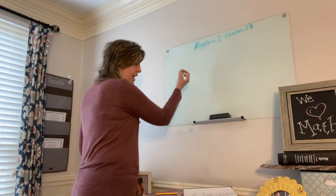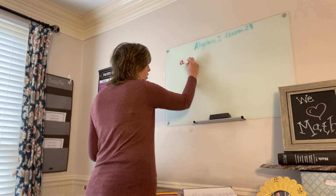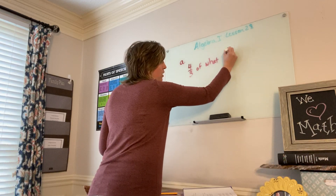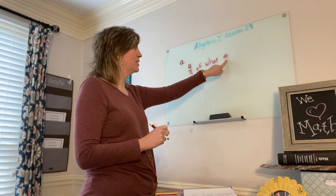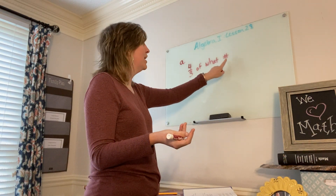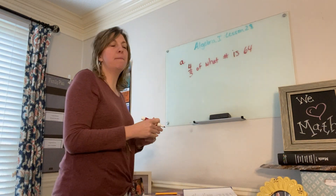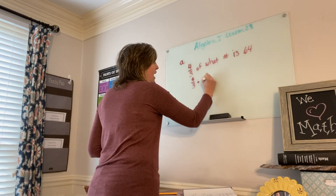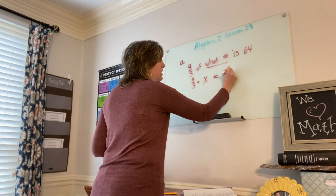On page 119, letter A says: four-thirds of what number is 64? I'm going to abbreviate 'number' with the hashtag symbol — which has always meant number — but nowadays we use it for hashtag. So rewriting this as a math sentence: four-thirds times X equals 64.